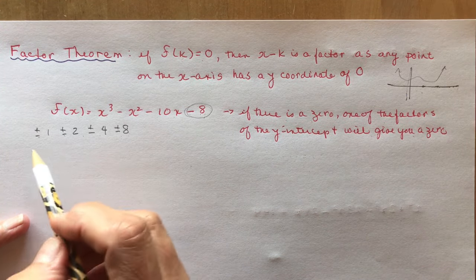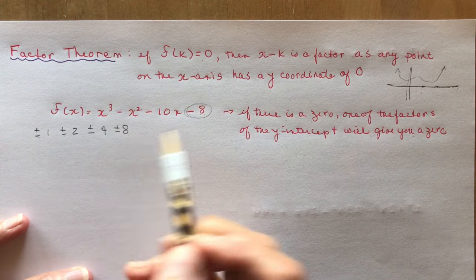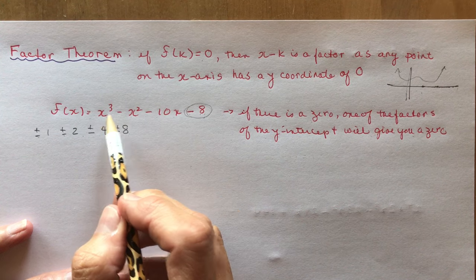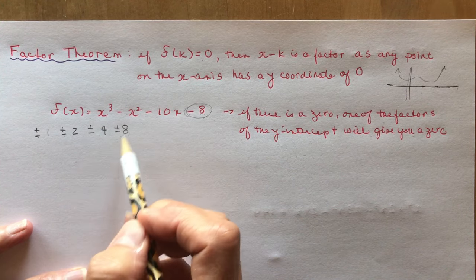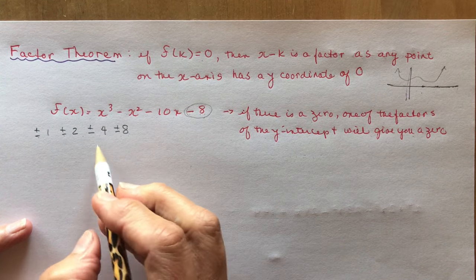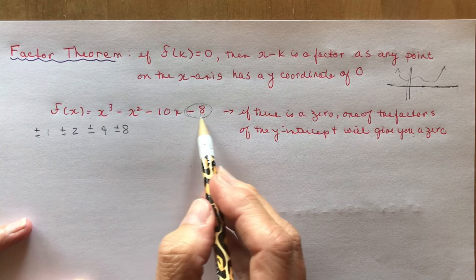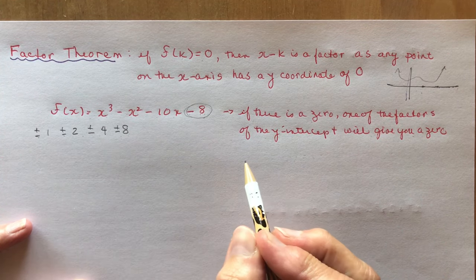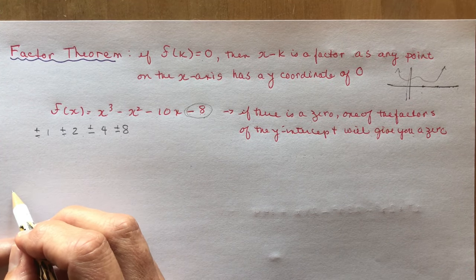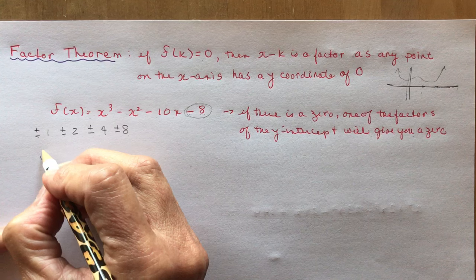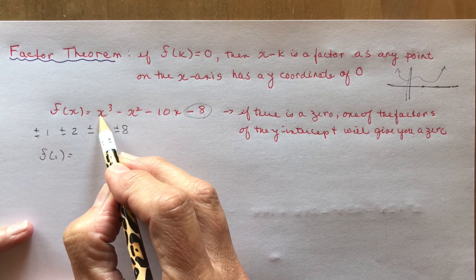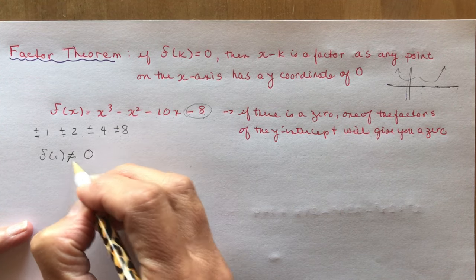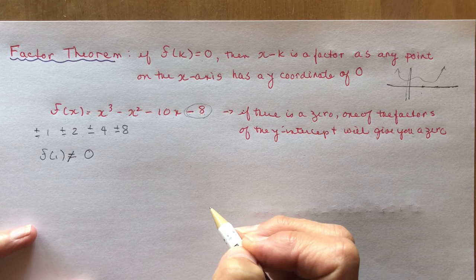You might want to start with plus or minus 1. You might see right away that 1 might work. Sometimes the numbers are really big and you'd have to go to a larger number, but you can do all this on your calculator. If you have a graphing one, you could plug in the equation and say: what's f at 1, f at minus 1, f at 2, and so on. Or if you had a graphing calculator you could actually find the zeros. So let's do f at 1: we have 1 minus 1, that's 0, minus 10, minus 8 — no, it's not equal to 0. It doesn't matter, you just know it wasn't a factor.